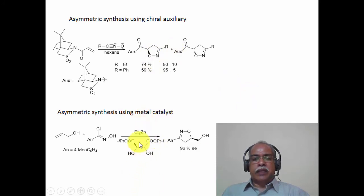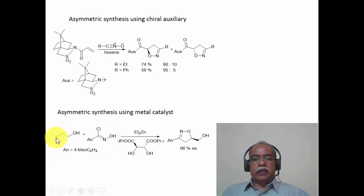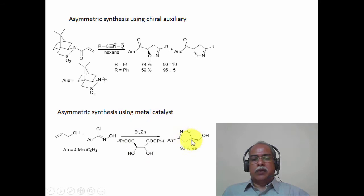Asymmetric synthesis using a metal catalyst is illustrated here. Diisopropyl tartrate is used and initially reacted with diethylzinc to produce the corresponding zinc chelated derivative. The chiral zinc chelate is made to react with allyl alcohol as the dipolarophile. The alpha-chloro oxime undergoes dehydrogenation to give the corresponding nitrile oxide, which then undergoes cycloaddition with the allyl alcohol to produce the product in 96% enantiomeric excess because of the chiral zinc tartrate auxiliary inducing chirality at the new stereocenter.